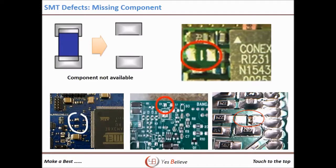During an audit, one company showed data with zero component missing within a month. Anyone with SMT experience will not believe this — component missing is one of the top priorities in SMT. Even with a perfect process, you cannot completely avoid it.